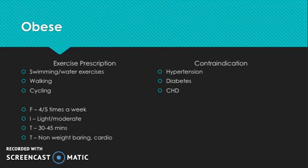For frequency, four to five times a week — because obesity can be quite devastating to a person's health and you want to help them lose weight as quickly and safely as possible. Light to moderate intensity, depending on the exercise: walking is naturally quite light, whereas swimming or water exercises are more moderate. Time: 30 to 45 minutes as a starting point, then increasing to around an hour as they get fitter. The type is non-weight-bearing activities such as swimming and cycling — cardio-based work to improve stamina.